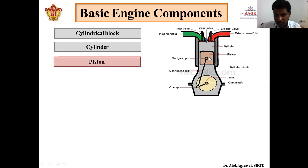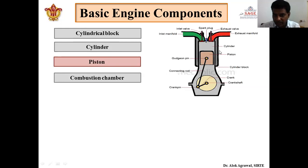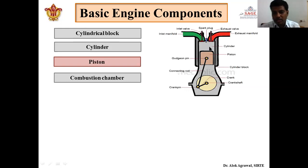Next is the piston. This is a circular cross-section component which reciprocates inside the cylinder. It will move up and it will move down, and it is operated with the help of the crankshaft via connecting rod and gudgeon pin. Next is the combustion chamber. The combustion chamber is the space between the upper portion of the piston and the cylinder head. This is a variable volume portion; the volume continuously changes as the piston moves from top to bottom and bottom to top.